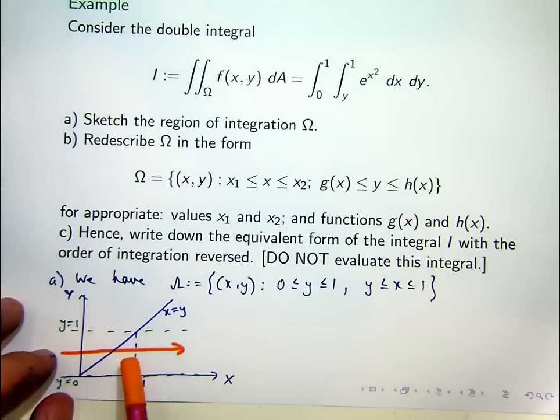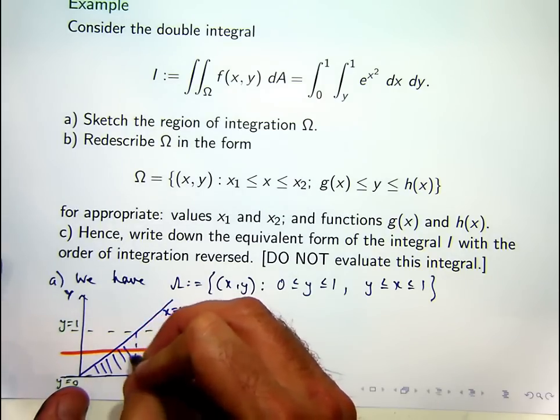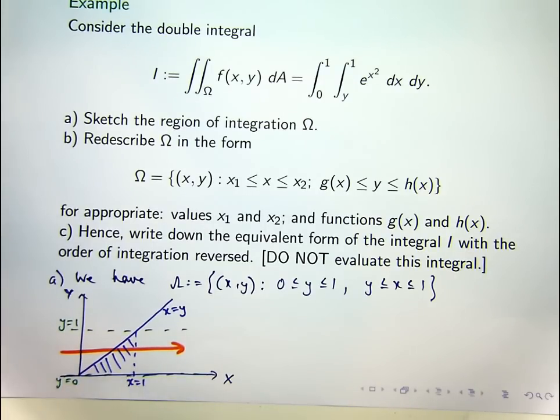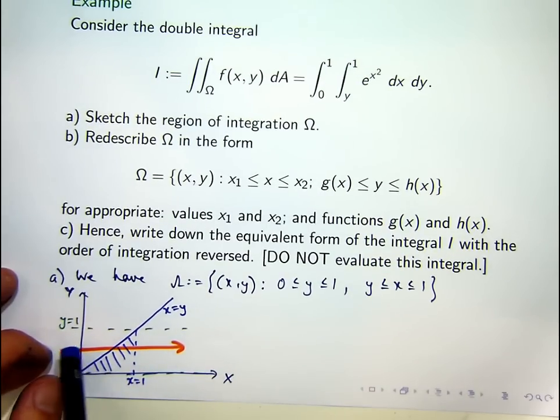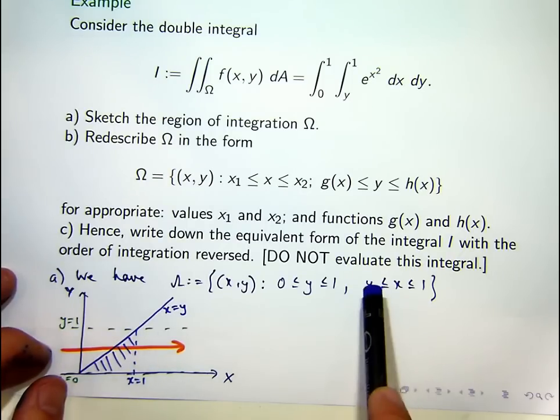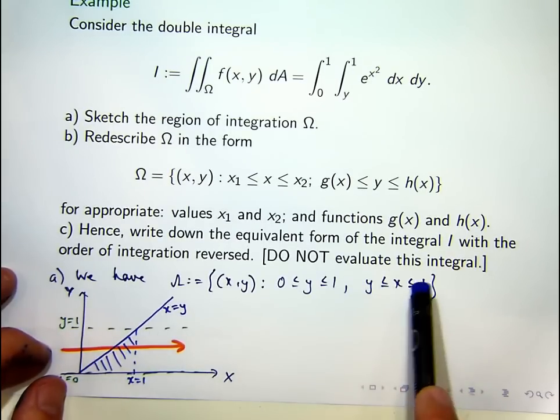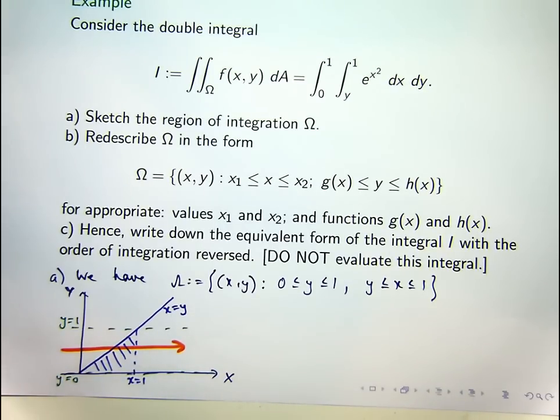You can see that if we choose this lower rectangle, then what this says is that this horizontal orange line enters this shaded region at x equals y, yep, and it leaves at x equals 1. So, yes, I've shaded the correct region in.